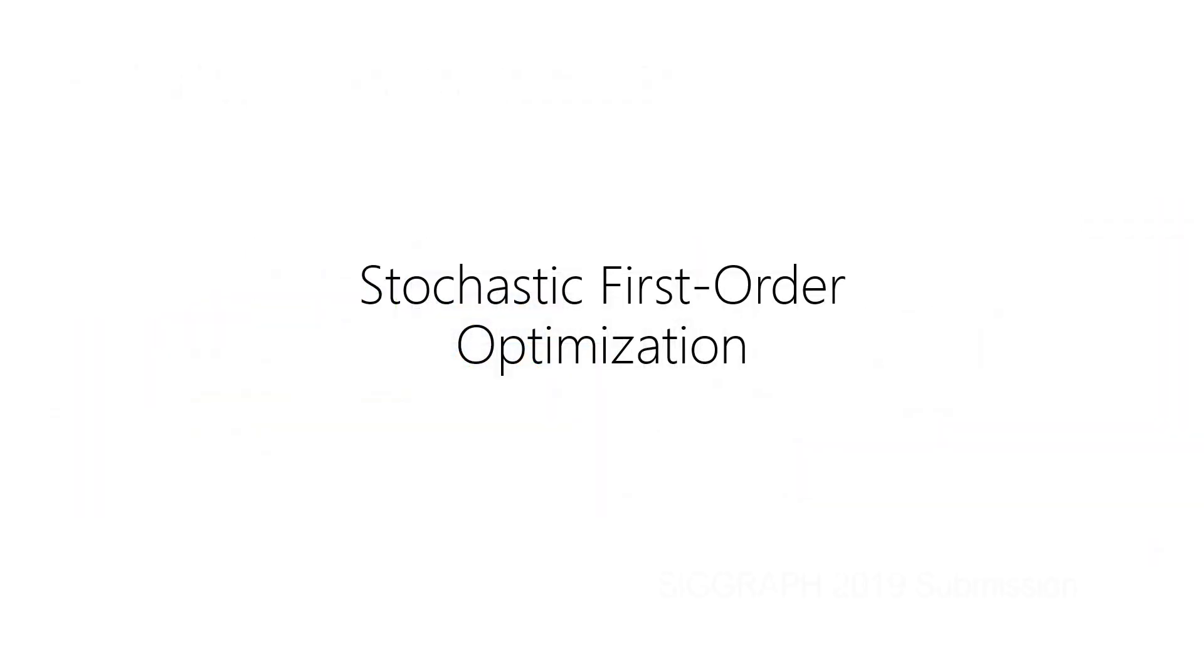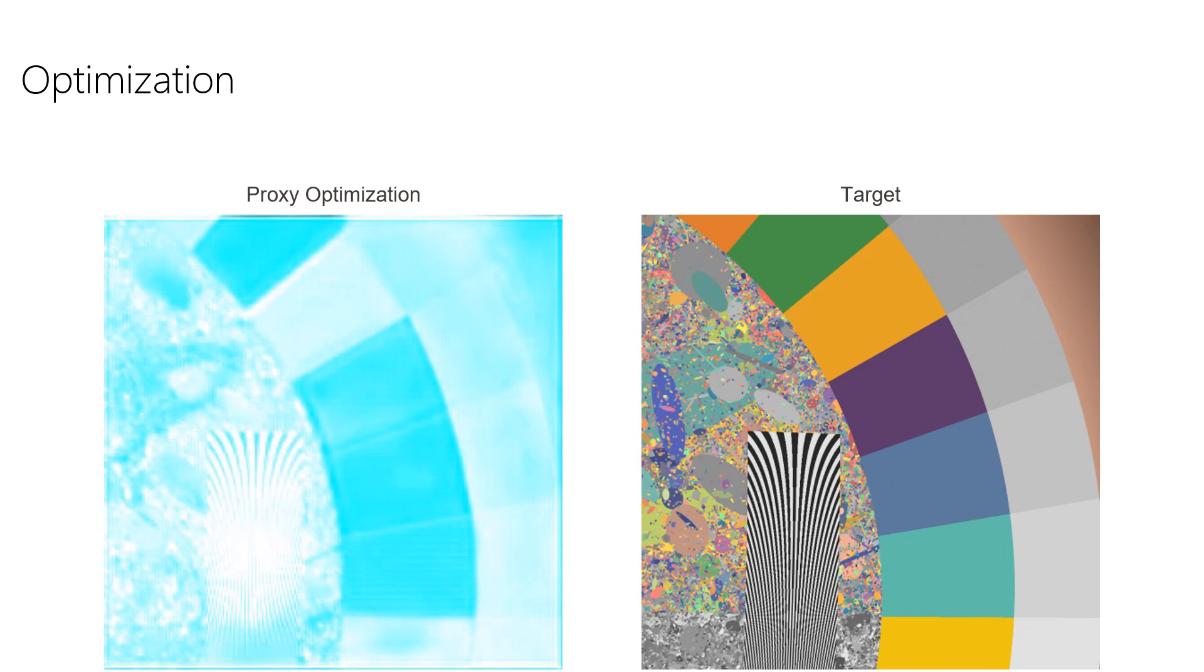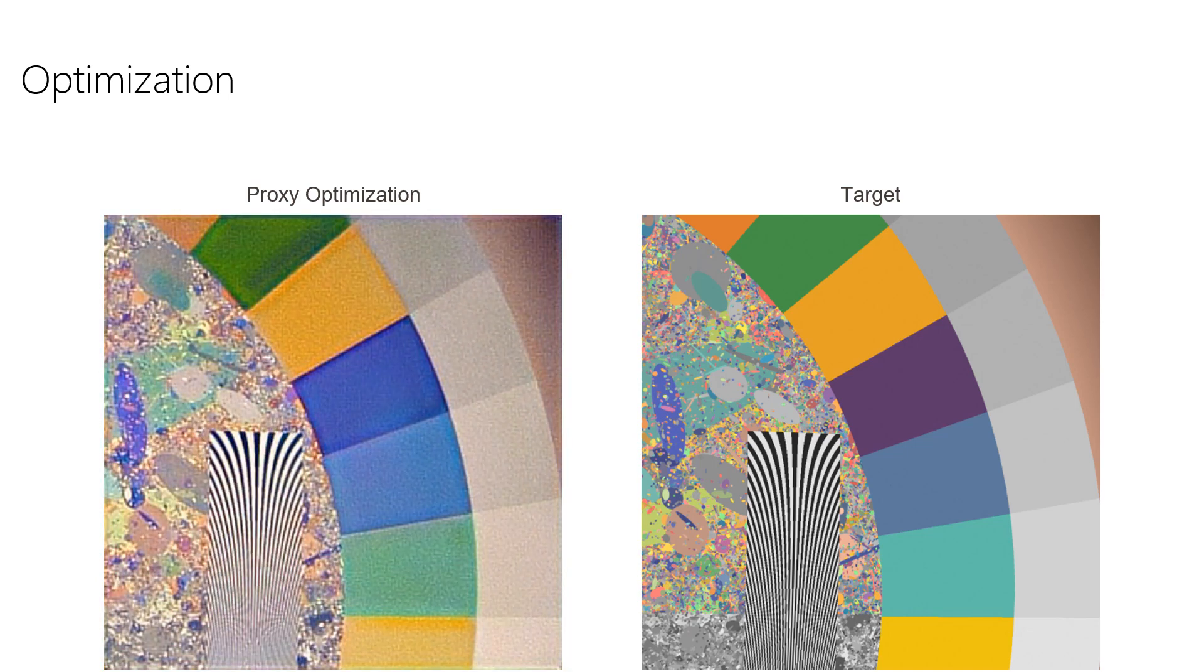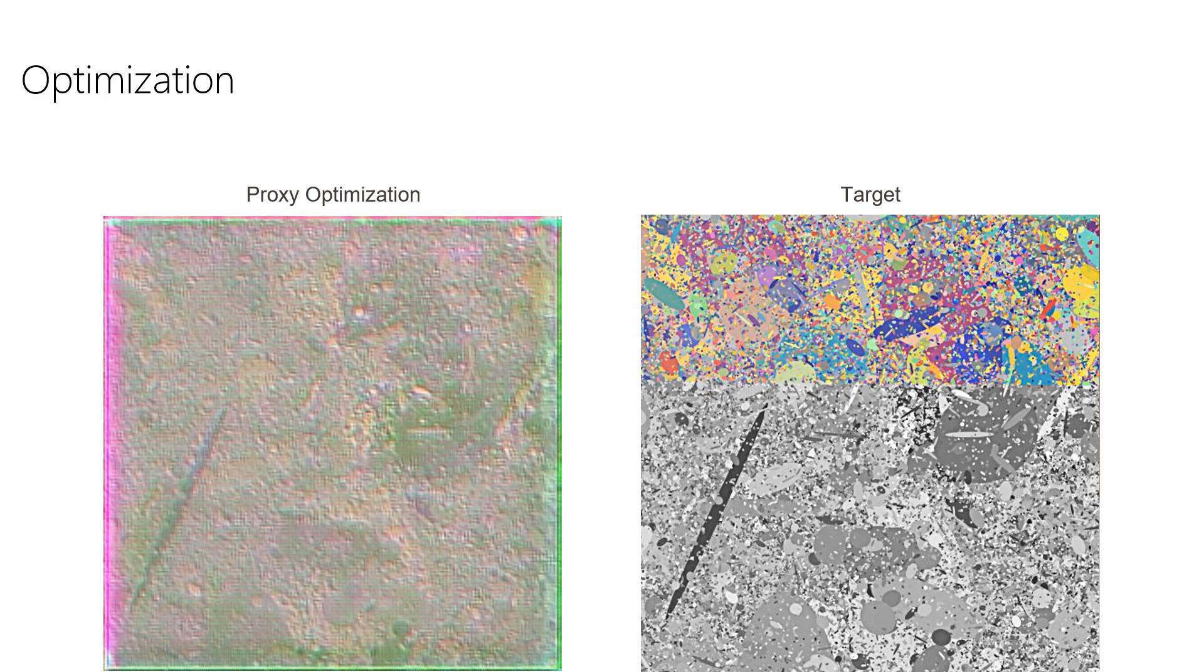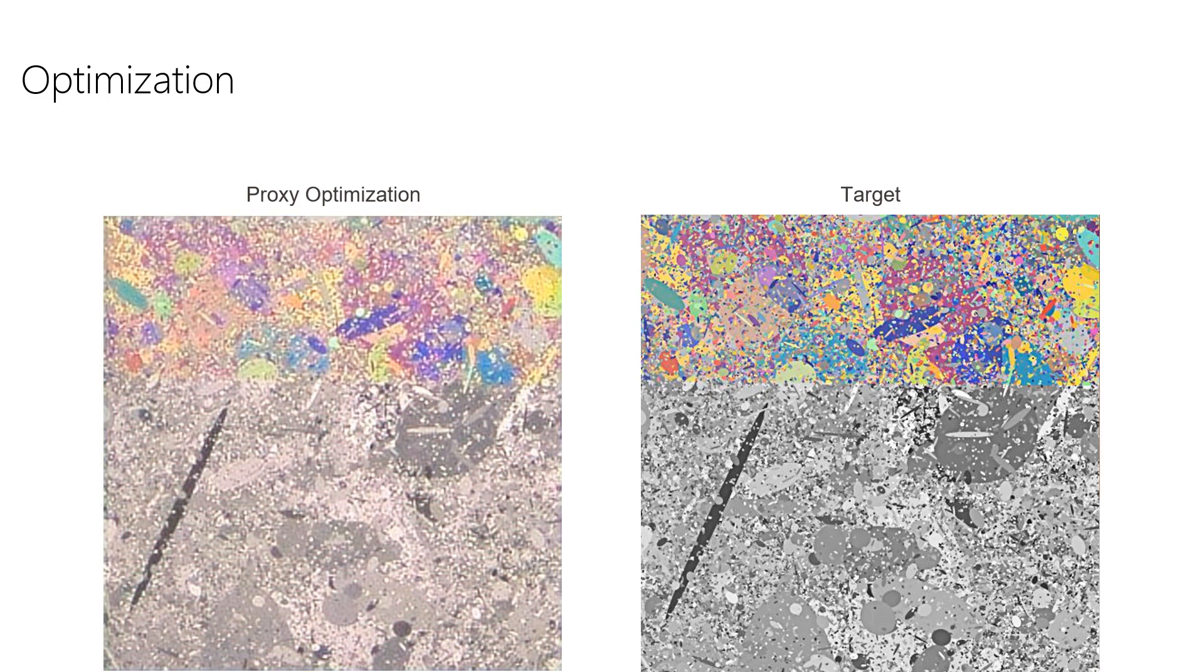Next, we visualize the second stage of our proxy model for image quality. Here we show our proxy model optimizing for parameters and how it eventually finds parameters that produce the desired target output. And here is a different target region that the proxy model also successfully optimizes for.